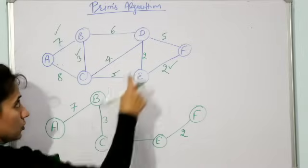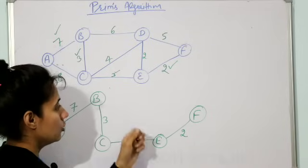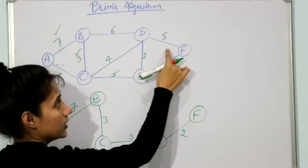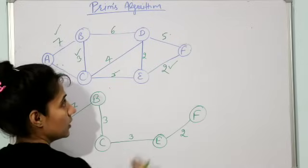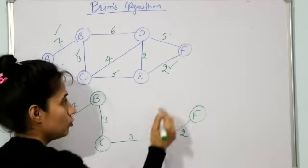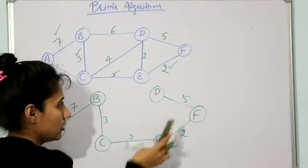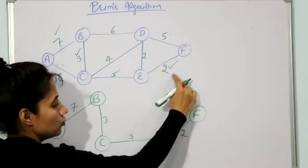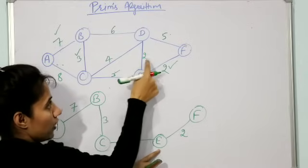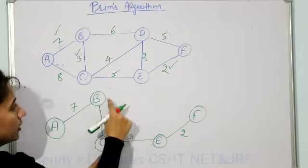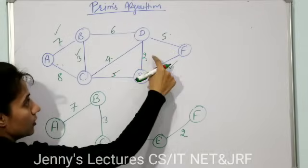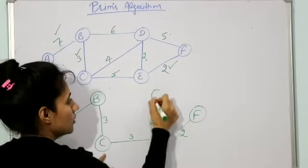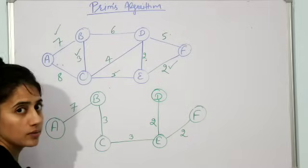We still have one vertex left not yet in the spanning tree. From F we have one remaining edge with weight five. But remember — you must still compare all incident edges from all vertices in the MST. From E we have a remaining edge with weight two, from C weight four, from A weight eight. Out of eight, six, four, two, and five, the minimum is two — so we choose the edge from E to D with weight two.